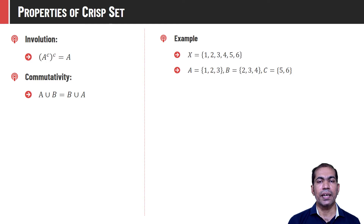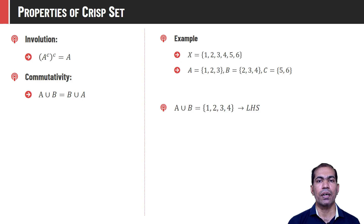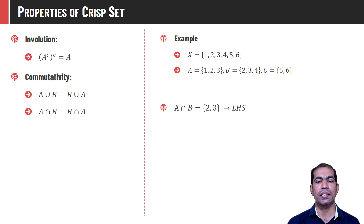Commutativity says that A union B is equal to B union A — it is something like the plus operator: A plus B is the same as B plus A. To prove this, let us first find A union B, which is {1, 2, 3, 4}. And if we compute B union A, that is also going to be the same. This property also holds for intersection: A intersection B is equal to B intersection A. A intersection B is {2, 3}, and B intersection A is also {2, 3}.